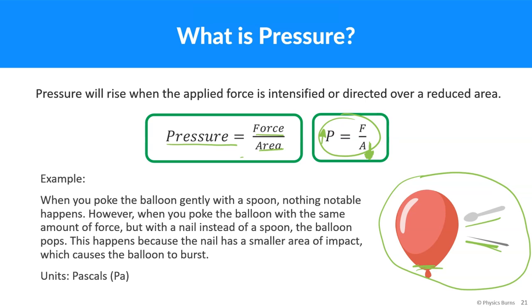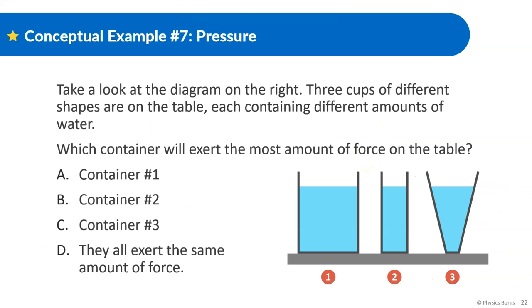That's kind of how shots work, how thumbtacks work — anything that has a very small area we call 'sharp,' which means it can apply a very large amount of pressure with a small amount of force. Now take a look at the diagram on the right: three cups of different shapes are on a table, each containing different amounts of water. Which container will exert the most amount of force on the table?